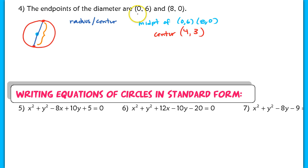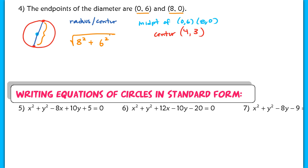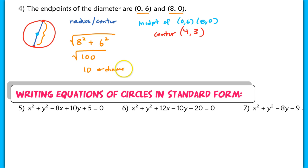Find the distance between (0, 6) and (8, 0) using our shortcut. The difference between 0 and 8 is 8, squared gives 64. Then 6 minus 0 squared gives 36. Square root of 64 plus 36 is the square root of 100, which is 10. That's the diameter. Don't forget to cut it in half — the radius is actually 5.